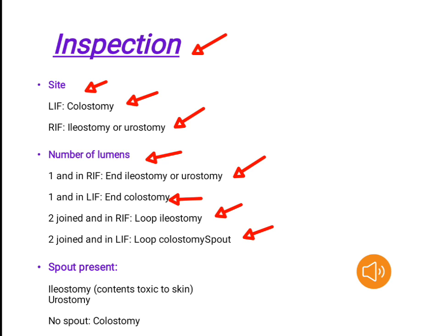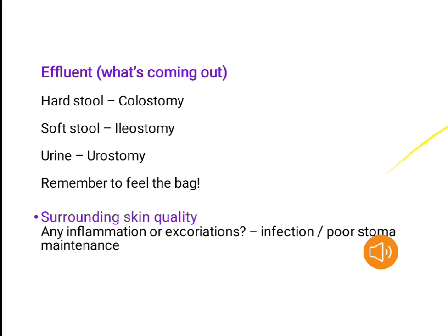Spout. Spout present: ileostomy, as the contents are toxic to the skin; or urostomy. No spout: colostomy. Effluent — what is coming out: hard stool indicates colostomy; soft or liquid stool indicates ileostomy; urine indicates urostomy.